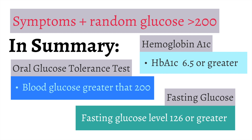In summary, look for symptoms of diabetes with a random glucose greater than 200 to diagnose diabetes. If symptoms are subtle, then a fasting glucose greater than 126, a two-hour post-oral glucose tolerance test glucose greater than 200, or a hemoglobin A1c of 6.5% or greater indicates diabetes. All tests should be repeated to confirm diabetes, unless there are overt symptoms of diabetes.